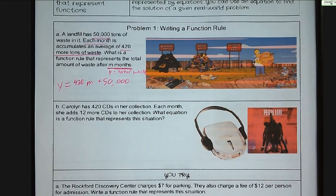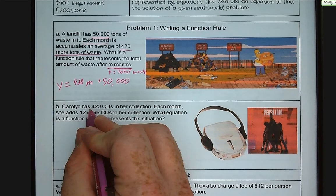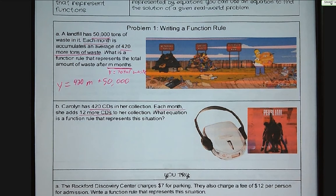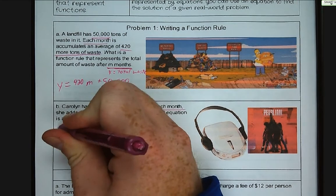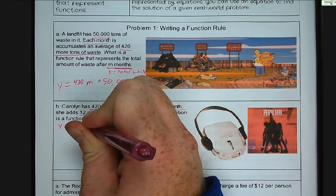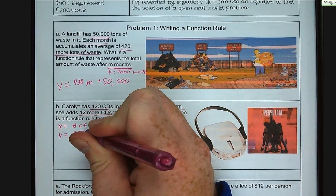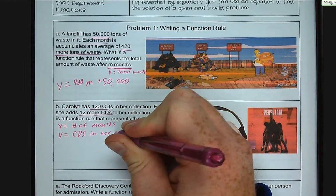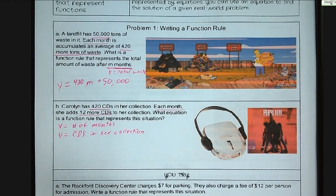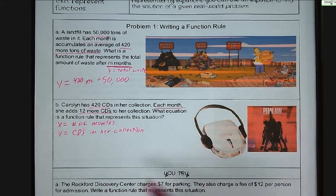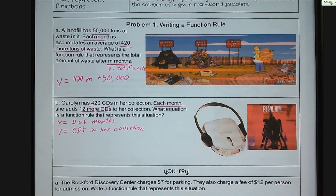Letter B. Carolyn has 420 CDs in her collection. Each month, she adds 12 more CDs to the collection. What equation is a function rule that represents this situation? So I'm going to say x is number of months and y is the CDs in her collection. Now, you should get in the habit of defining what your variables are, especially if you're using something generic like x and y. You should always tell us what we are talking about, what each variable is.